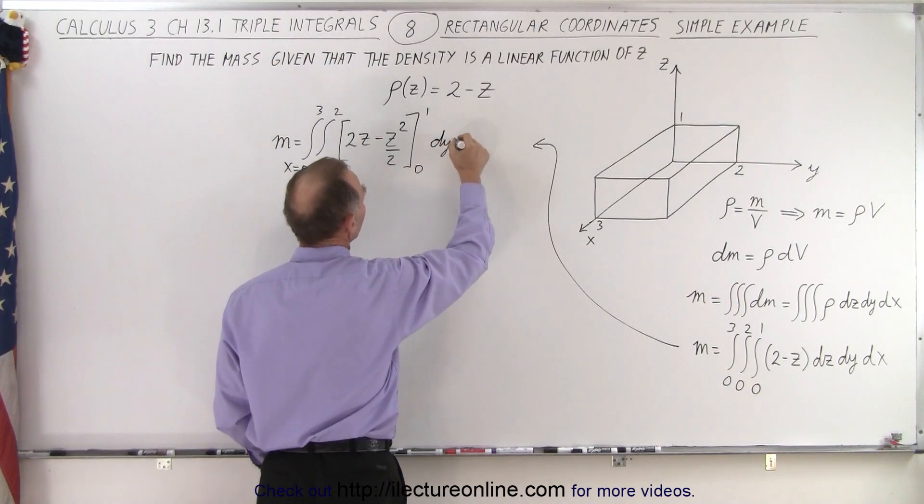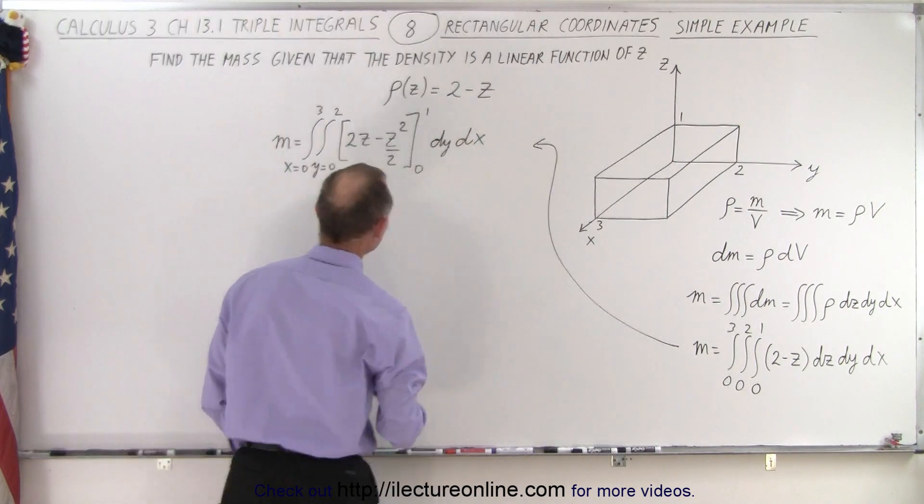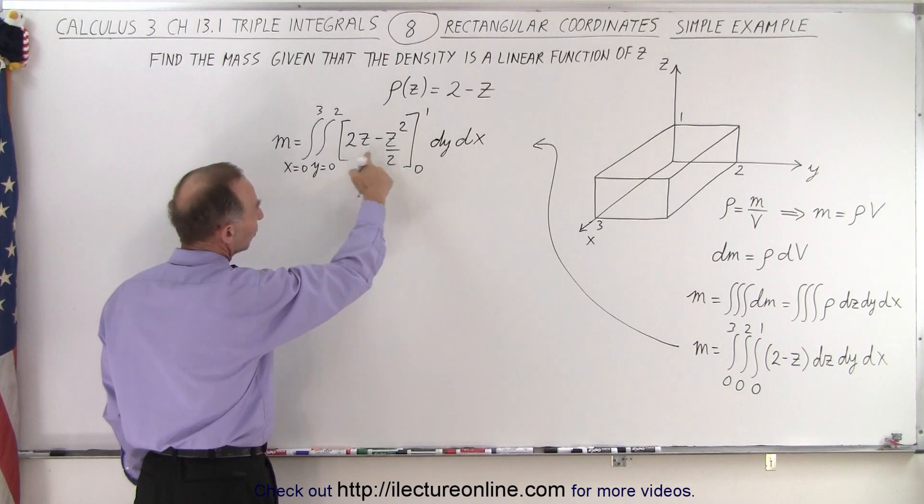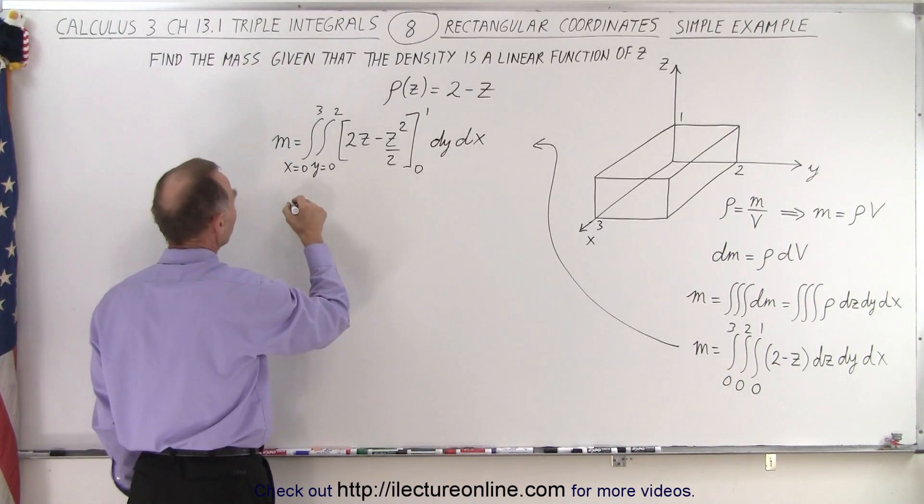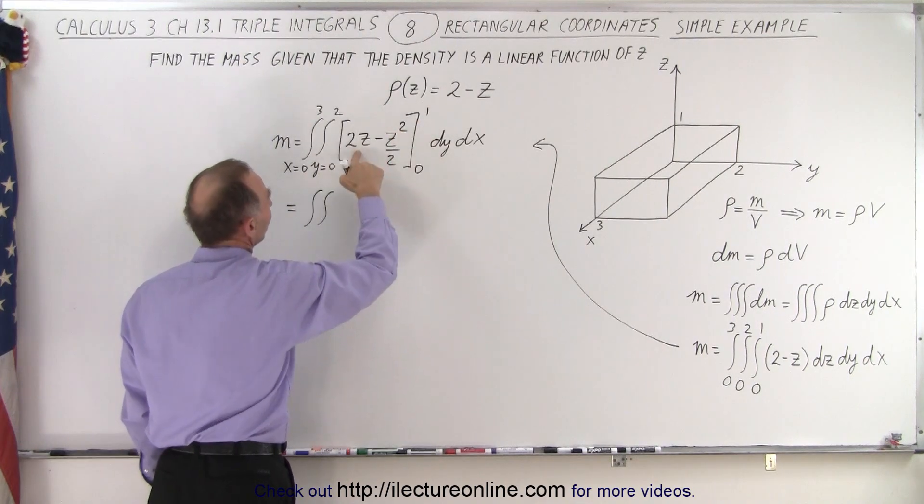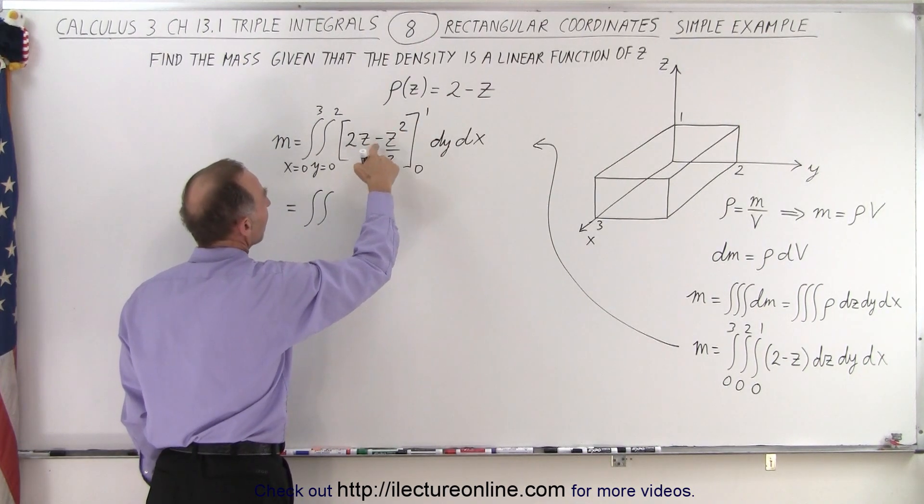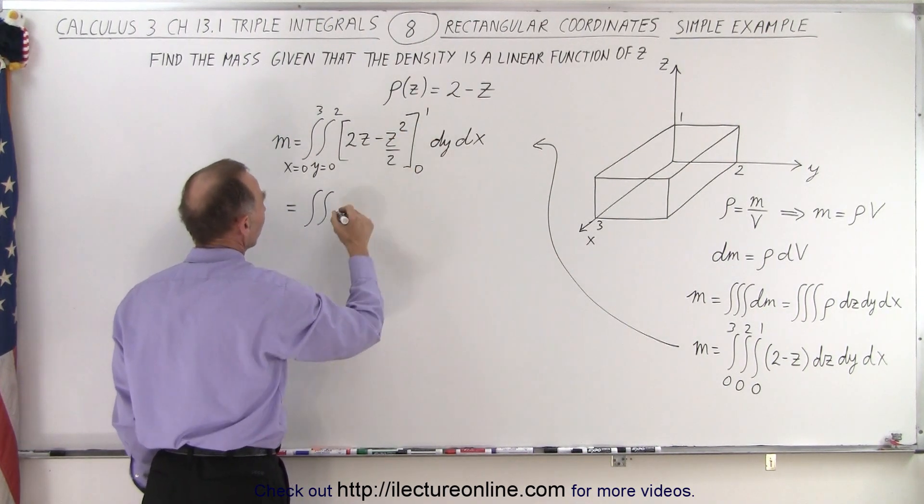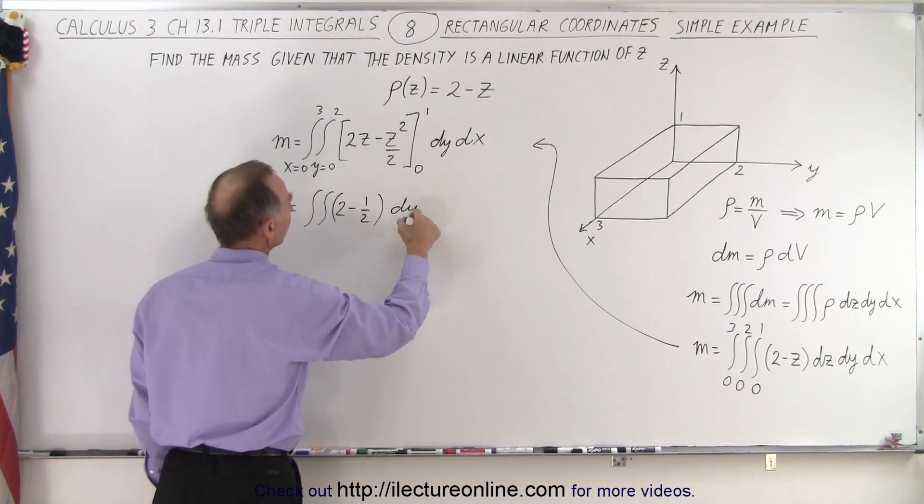And that's going to be evaluated from 0 to 1. We still have dy and dx. So when we plug in the lower limit, we'll get nothing. When we plug in the upper limit, this is the double integral of, when we set that equal to 1, we get 2 times 1 minus 1 over 2, which is 1 half. So that's 2 minus 1 half times dy dx.